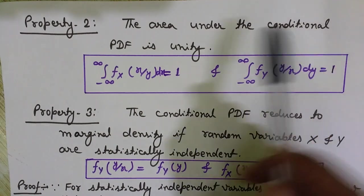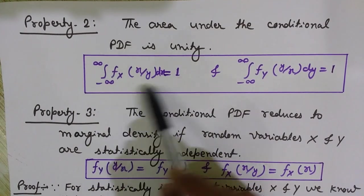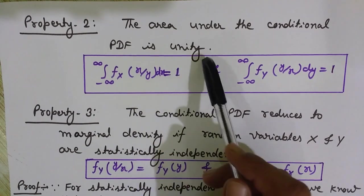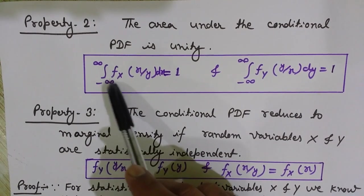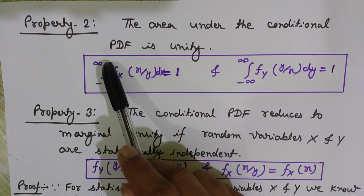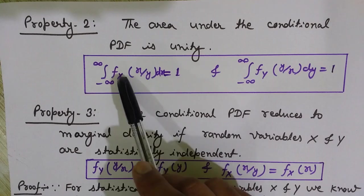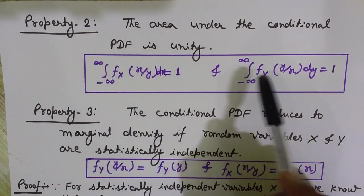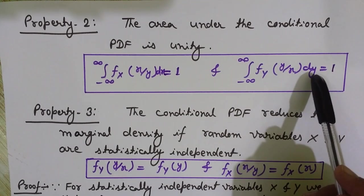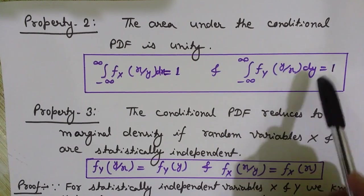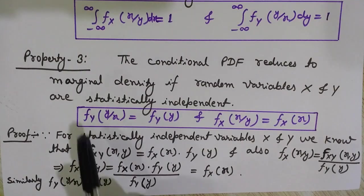Property number two: the area under the conditional probability density function is unity, meaning it equals one. To find the complete area under the curve, we integrate the conditional PDF from minus infinity to infinity. For the conditional PDF of X, integrate with respect to x; for Y, integrate with respect to y. This integration simply gives the area under the conditional PDF, and that area equals one.